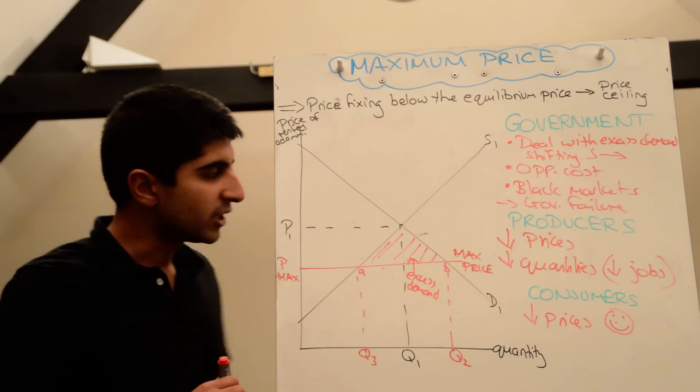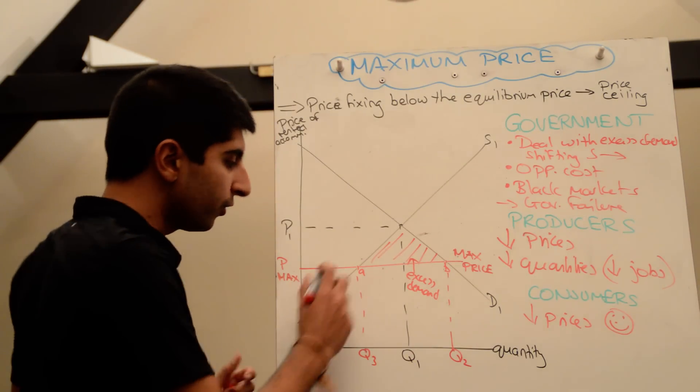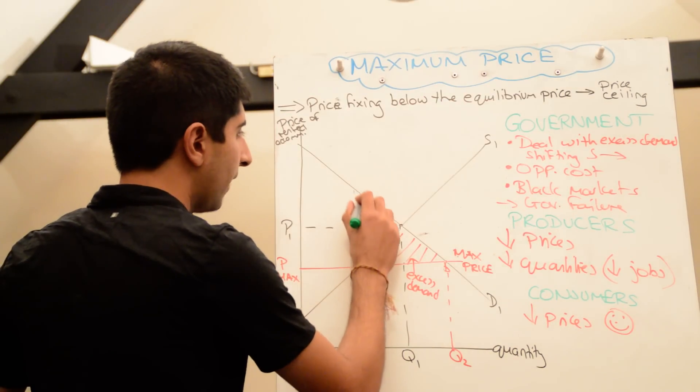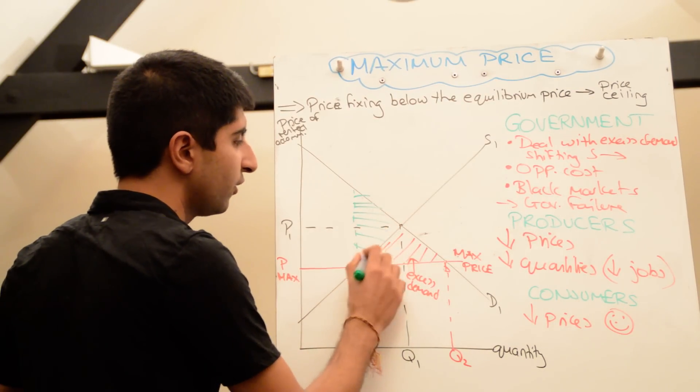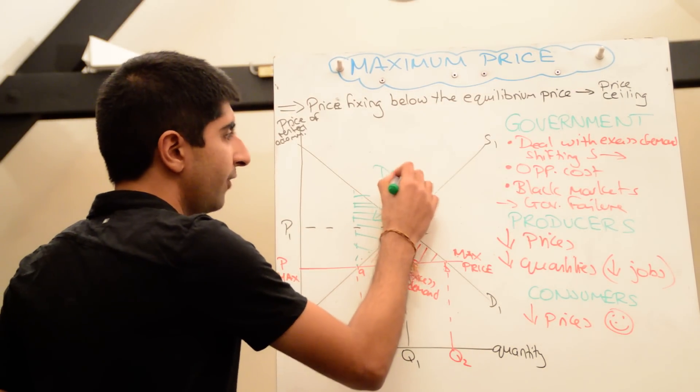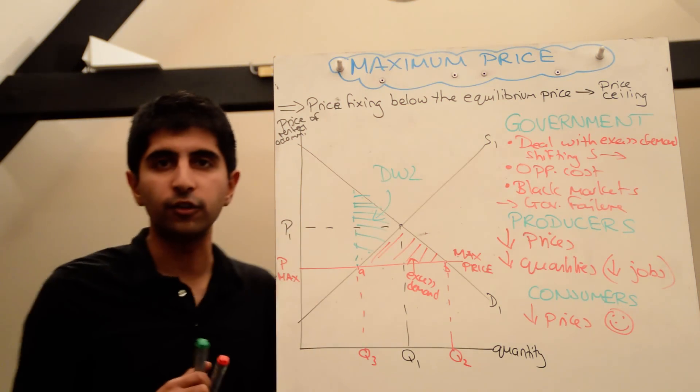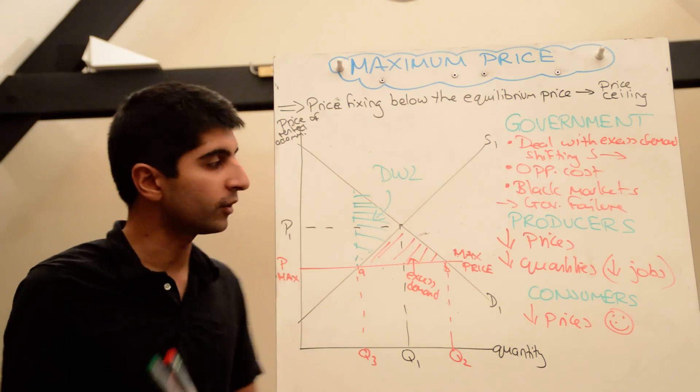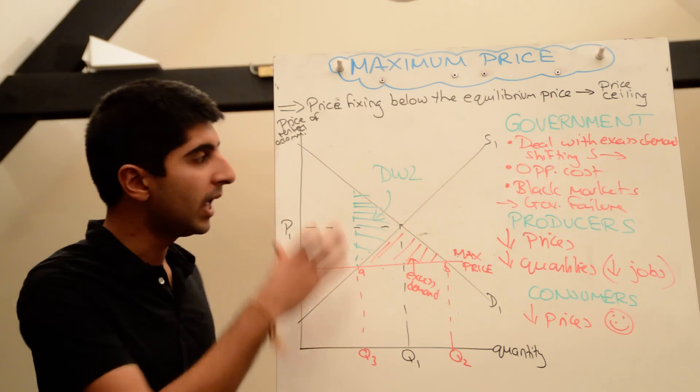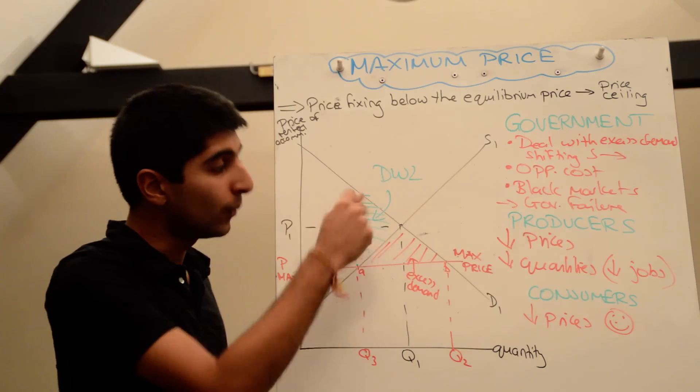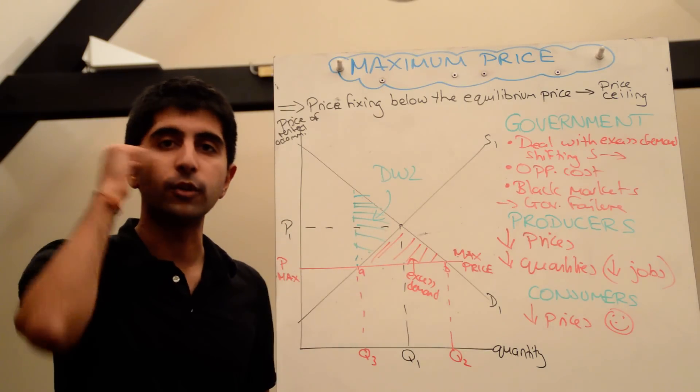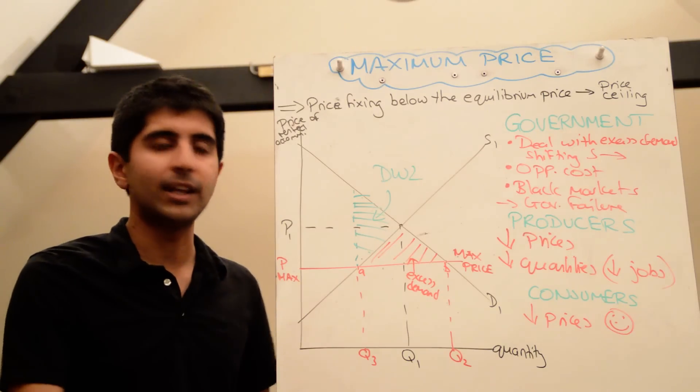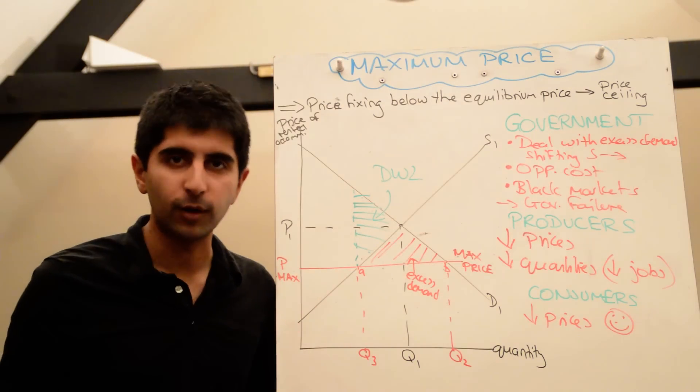And finally, we'll finish by saying that a maximum price also imposes a deadweight loss on society, just like a minimum price did. And the deadweight loss is this triangle here. Now if you want to understand why this deadweight loss is caused, watch my video on why a maximum price causes a deadweight loss. I'll go through it in detail. But if you draw a minimum price diagram like this, analysis like this, with the deadweight loss to society, you will score massive marks. So stick this on, you will score. If you want to understand it, watch the video on why a deadweight loss is caused.